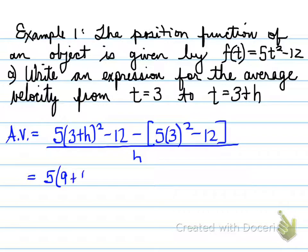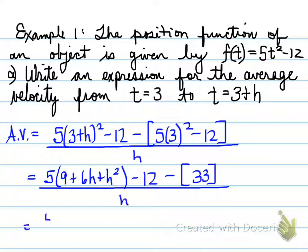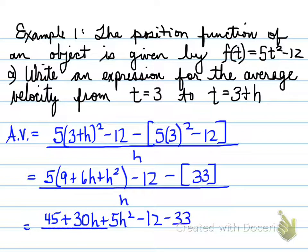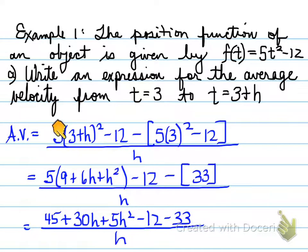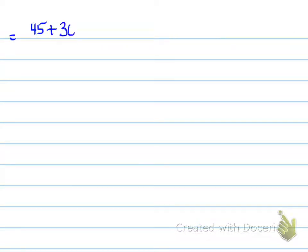When we plug that in, we find that the average rate of change, once simplified, gives us 45 + 30h − 5h². All of this is the expanded form of f(3 + h). We expand (3 + h)², fold it out, and expand again. Moving to the next page, we collect like terms.